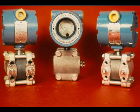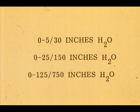The Rosemount differential pressure transmitters will measure from 0–5 to 0–750 inches of water differential. Three different sensor modules are required to cover this range. This table shows the span limits of each sensor for the differential pressure modules — note that the span rangeability is 6 to 1.